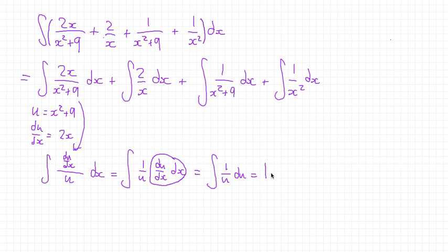We'll worry about a constant of integration maybe later. But this is the answer. And to get it back in terms of x, we just need to reverse the substitution. And so we end up with the natural log of the absolute value of x squared plus 9.